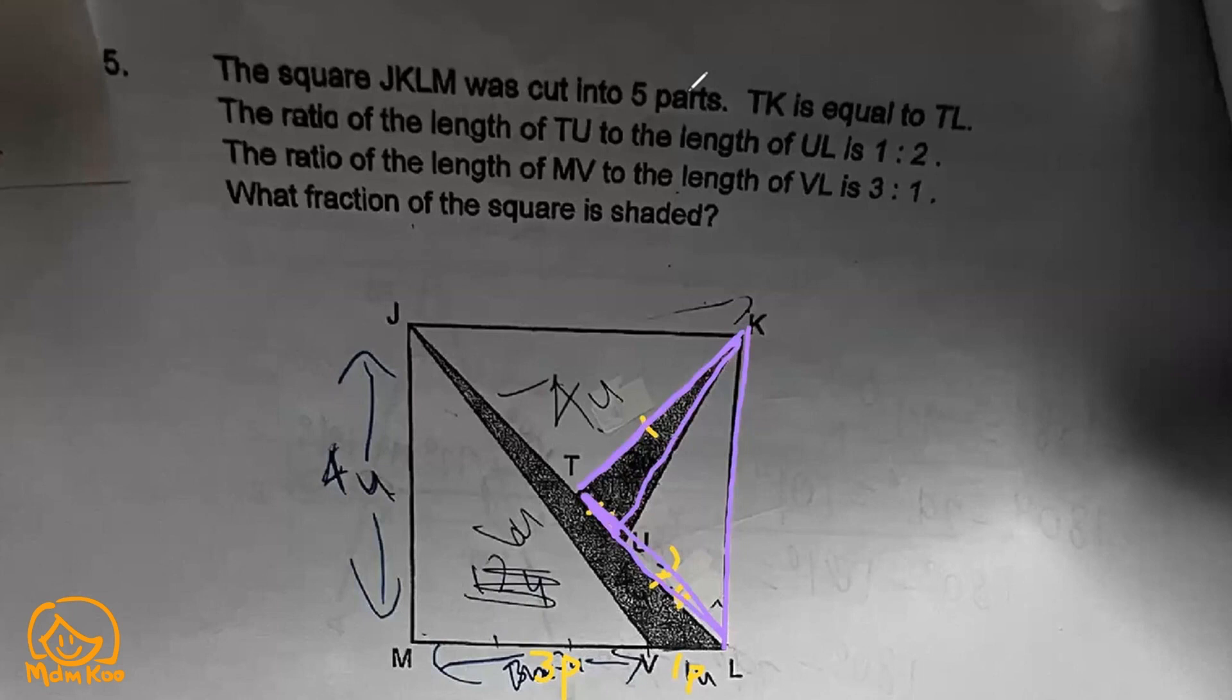So if this shaded part here has the base that is one third of this, the area will also be one third because the area is half times base times height, so the base actually determines that.